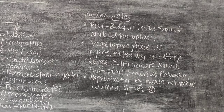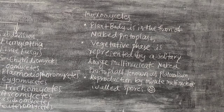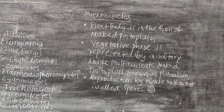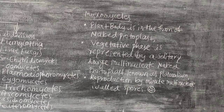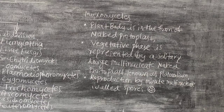What is plasmodium? The vegetative plant body represented by a solitary large multi-nucleated naked protoplast is known as plasmodium — this is usually asked in examinations. Regarding reproduction, it occurs by means of multi-nucleated walled spores. The spores have a wall, and these multi-nucleated walled spores are involved in reproduction.